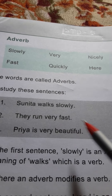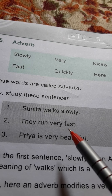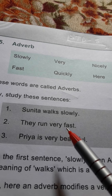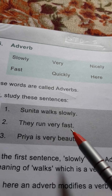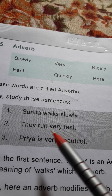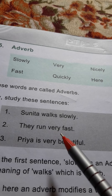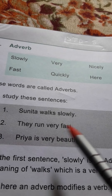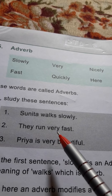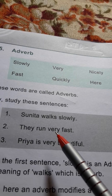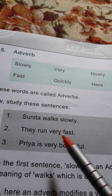दूसरा, they run very fast. वे लोग बहुत तेजी से दौड़ते हैं. यहां पर जो very है, adverb है और fast भी adverb है, क्योंकि यह बताता है कि वे लोग तेजी से बहुत दौड़ते हैं. तो adverb की भी विशेषता बतलाता है very. Fast जो adverb है, उसकी भी विशेषता बतलाता है very. इस तरीके से हम देखते हैं कि adverb की विशेषता बतलाने वाले शब्द भी adverb हैं.